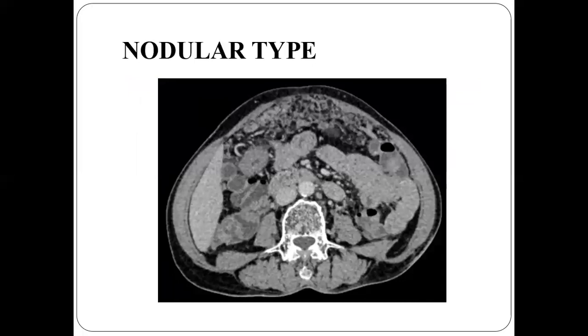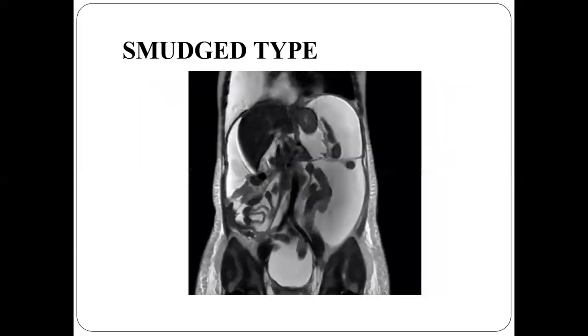This is the nodular type of peritoneal involvement demonstrated in an axial CT section in a case of ovarian carcinoma. This is the smudge type shown in a coronal image.